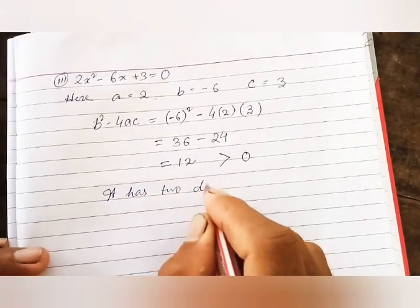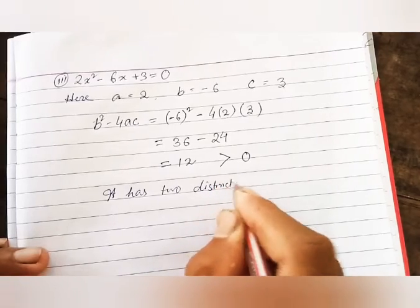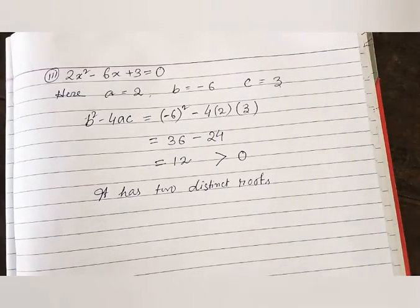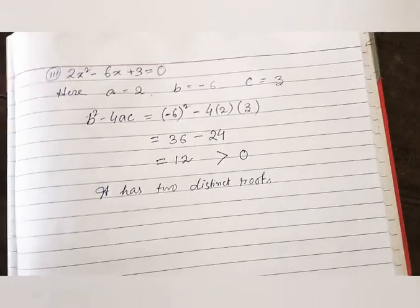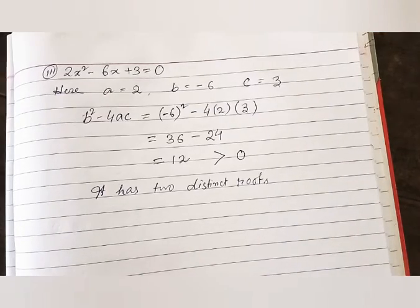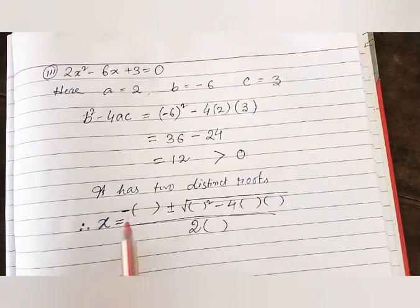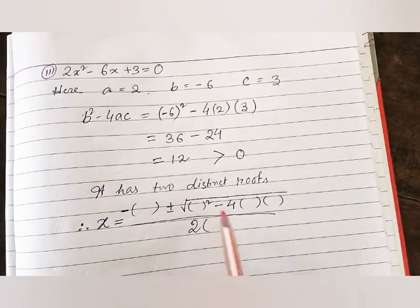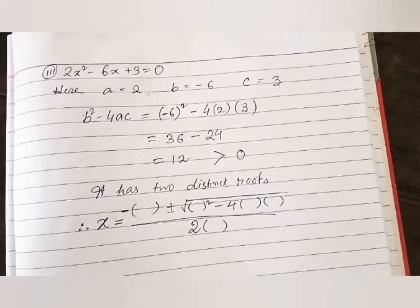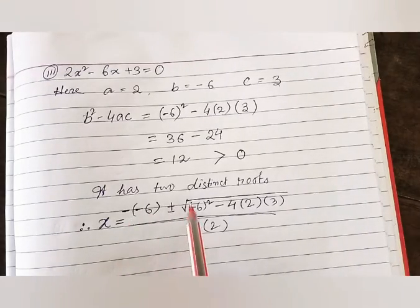The equation has two distinct real roots — two different real roots. That means it has roots, so we need to find them. Let us find them by applying the formula x = (-b ± √(b² - 4ac)) / 2a. Replacing all values with b = -6, a = 2, and b² - 4ac = 12.